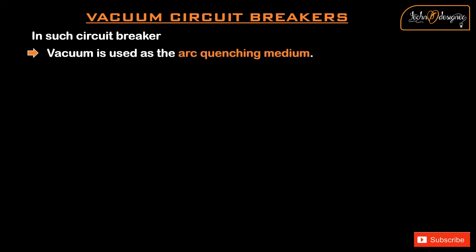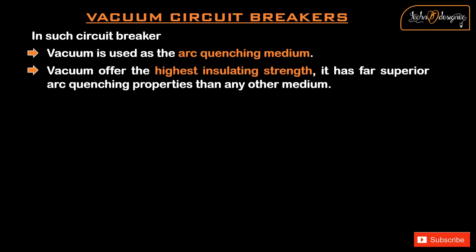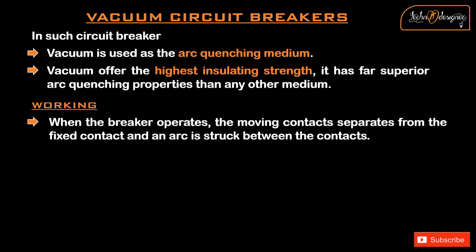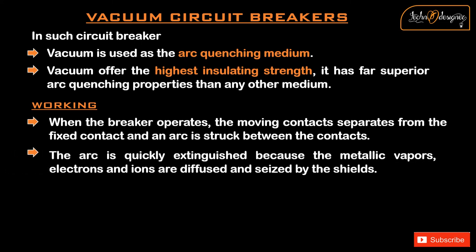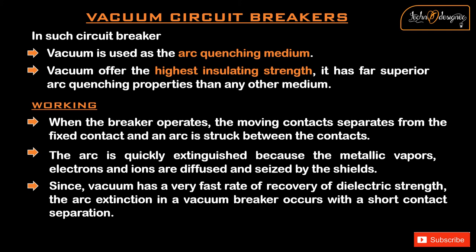Vacuum circuit breakers: In such circuit breakers, vacuum is used as the arc-quenching medium. Vacuum offers the highest insulating strength; it has far superior arc-quenching properties than any other medium. Working: When the breaker operates, the moving contacts separate from the fixed contact and an arc is struck between the contacts. The arc is quickly extinguished because the metallic vapors, electrons and ions are diffused and seized by the shields. Since vacuum has a very fast rate of recovery of dielectric strength, arc extinction in a vacuum breaker occurs with a short contact separation.